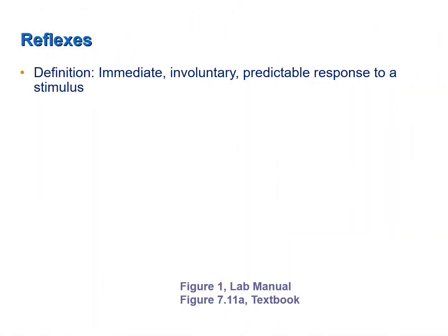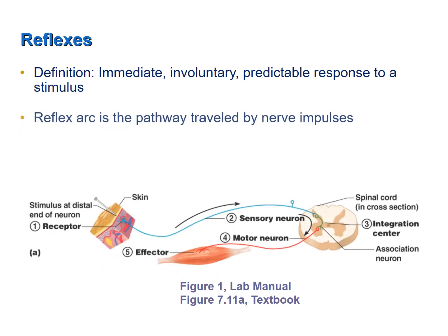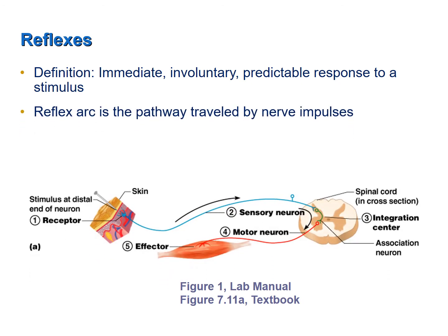A reflex is an immediate, involuntary, predictable response to a stimulus. The reflex arc is the physical pathway that is involved in the production of a reflex, and it always consists of five components.